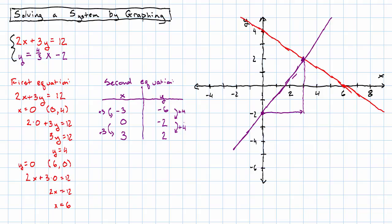I can see my solution here. The solution to the system is the point where the two lines cross. In this case, x is 3, y is 2.